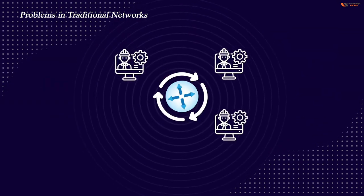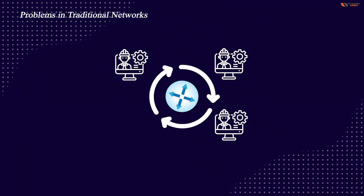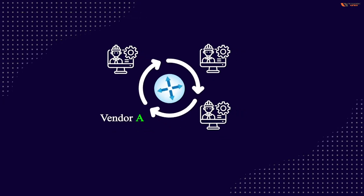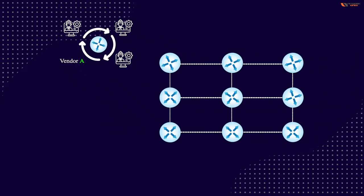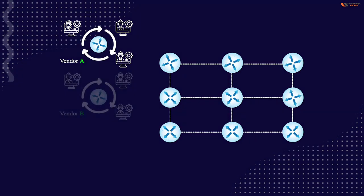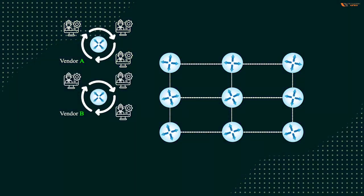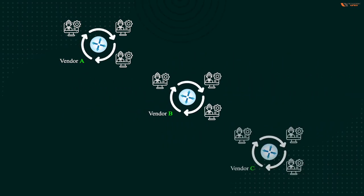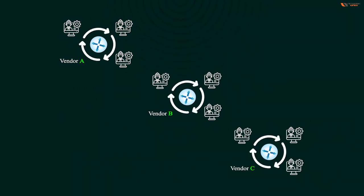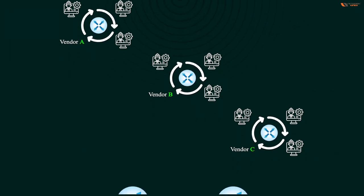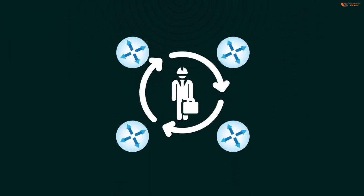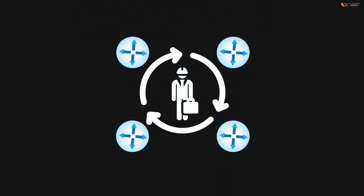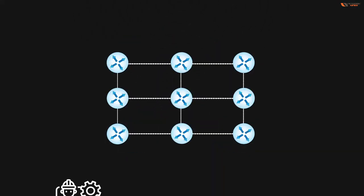Another problem is that you are hiring many engineers with expertise on one vendor. Suppose you have Cisco devices — you need Cisco engineers. If you have Juniper devices you need Juniper engineers, and if you have Arista devices you need Arista engineers. So companies are looking for multi-technology or multi-skill engineers, but it is very rare that one person knows all things.